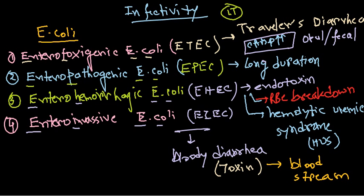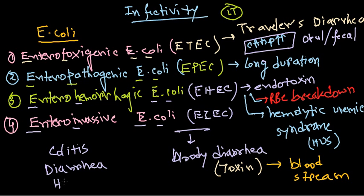In all these cases, the infectivity of E. coli leads mostly to bloody diarrhea. All these symptoms are categorized as colitis and are related to diarrhea. Sometimes they are also associated with hemolytic uremic syndrome, or HUS, where blood comes out with urine. That covers the infectivity of the major pathogenic E. coli types. Thank you.